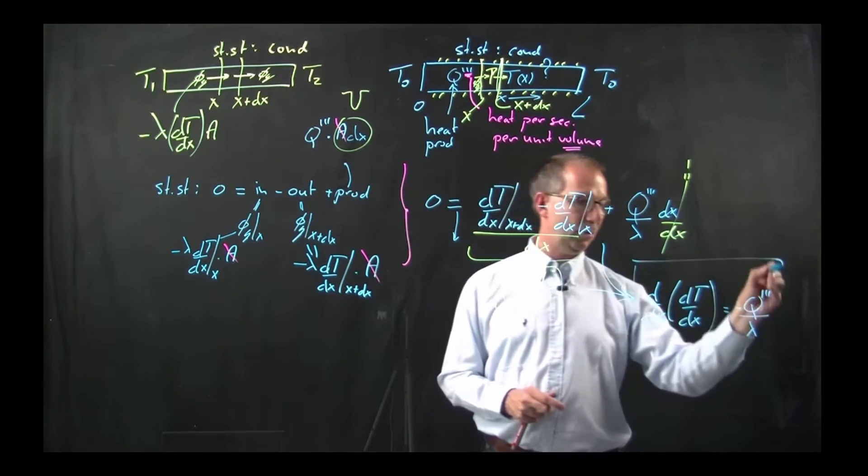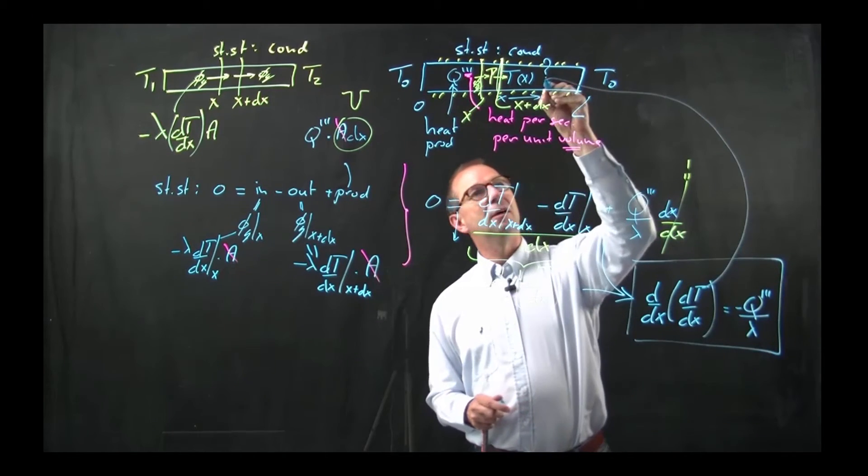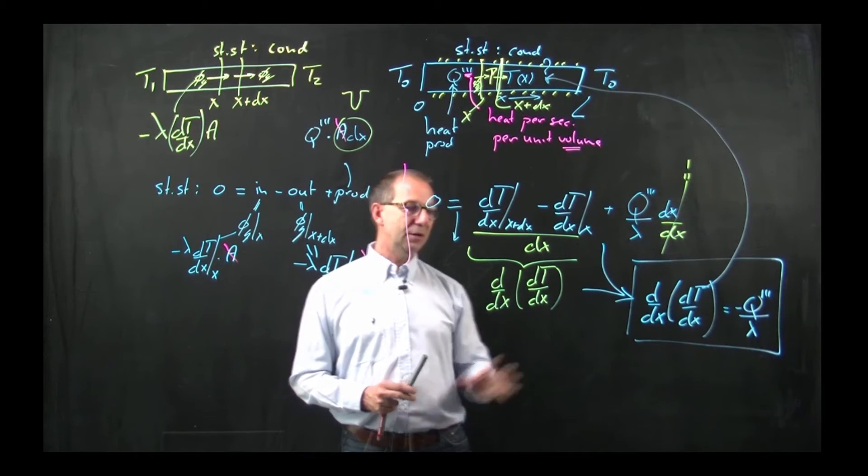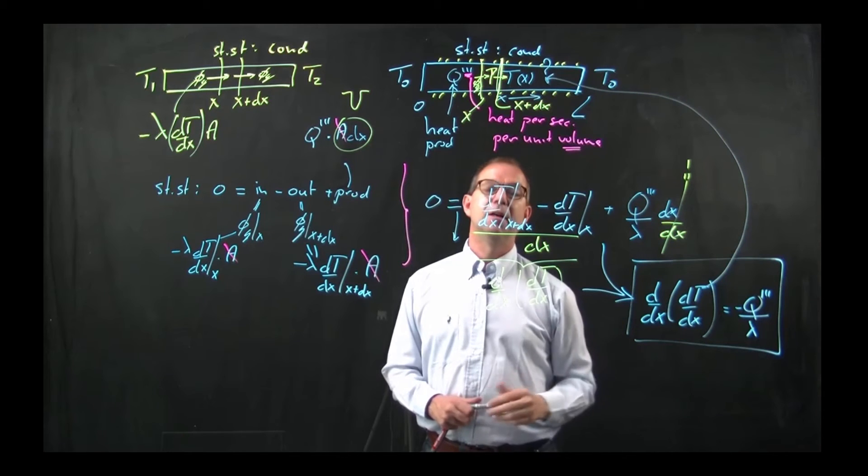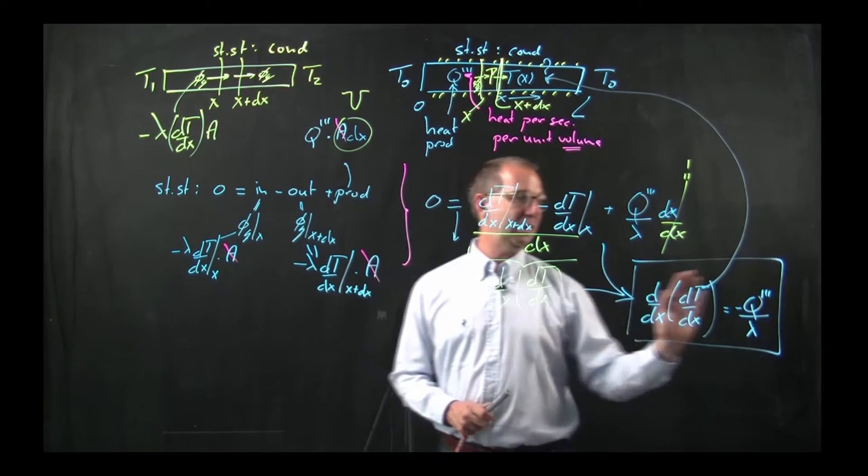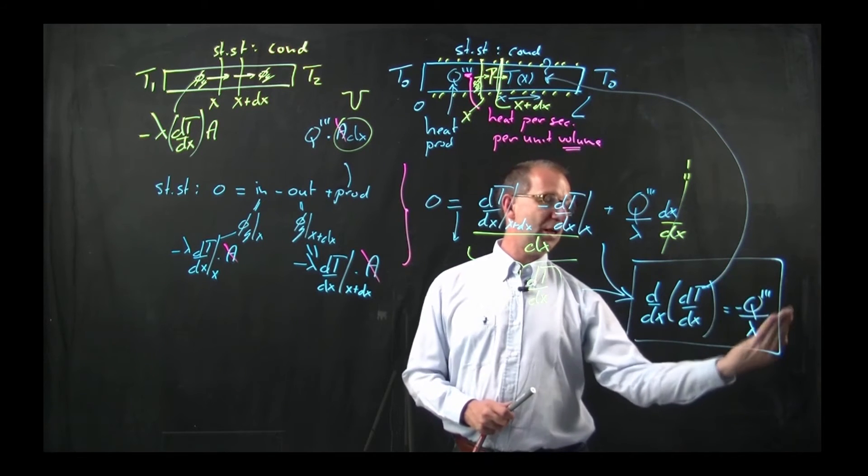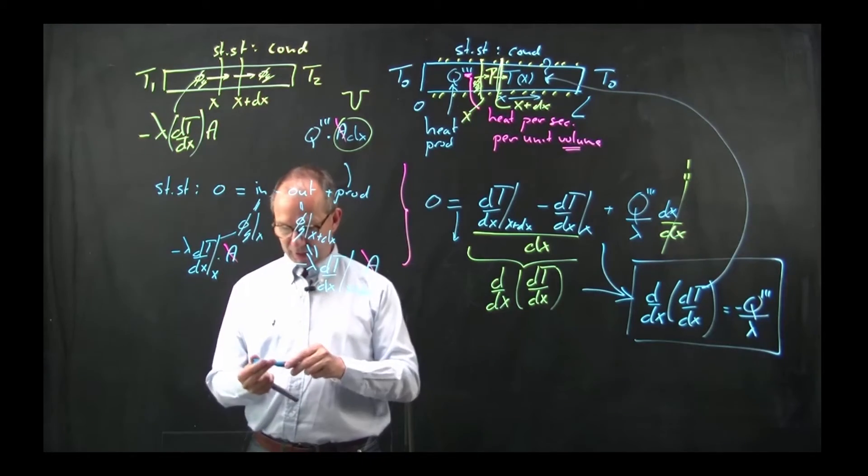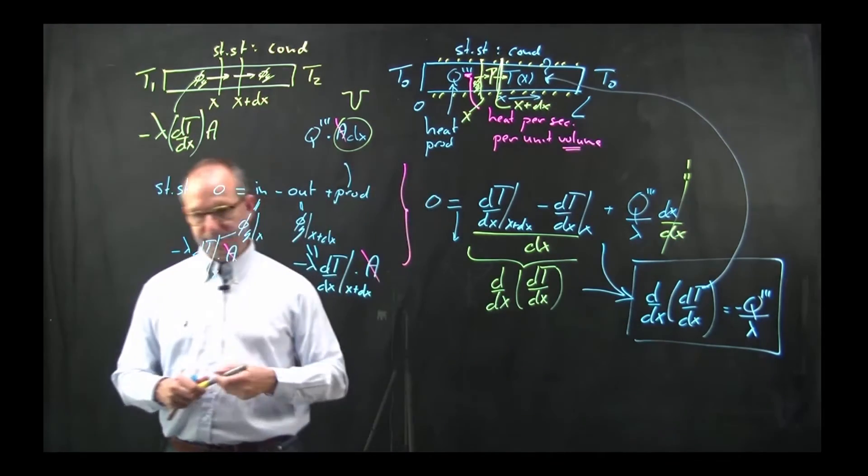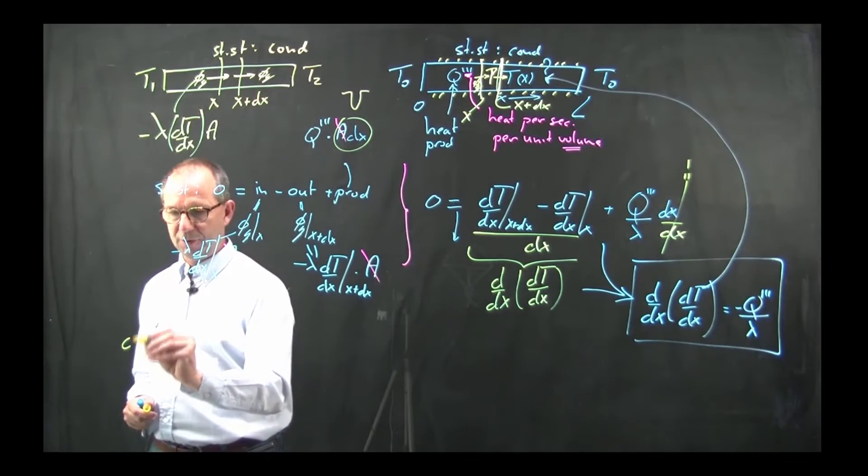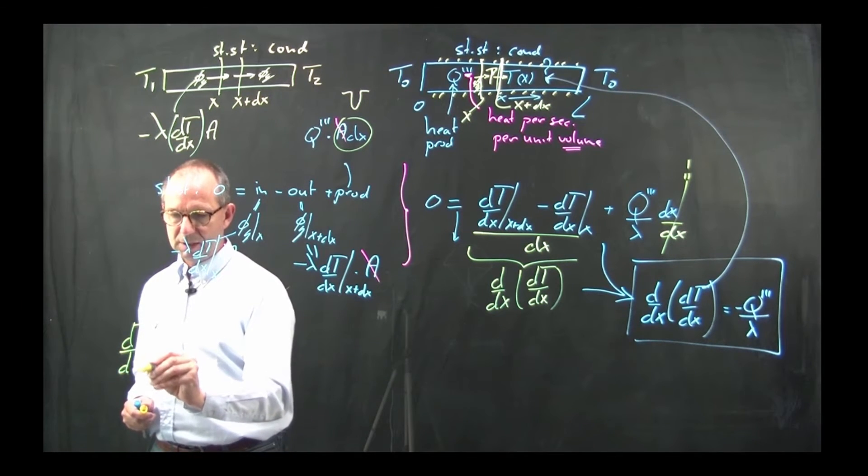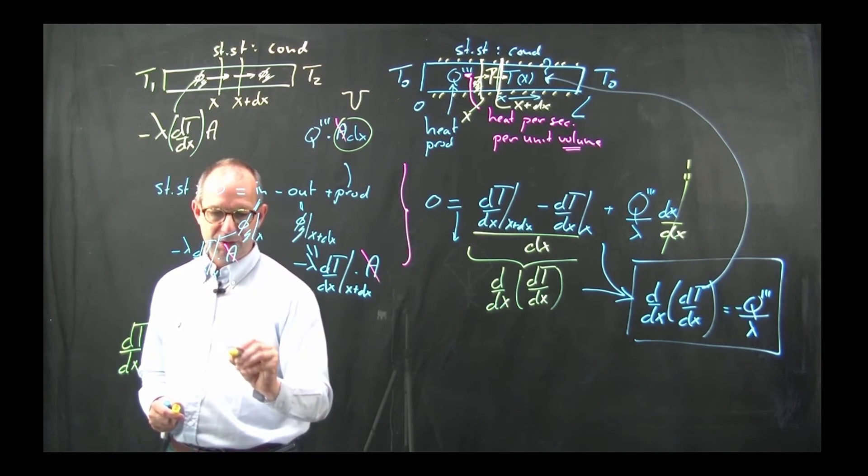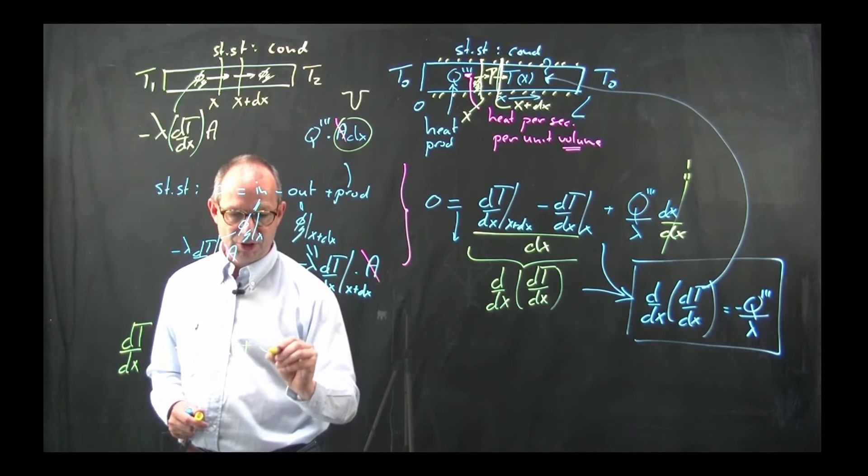Here is our new equation that governs the temperature distribution. This looks pretty much like we had in the video lecture, except that here was a zero because there was no production. This can be solved along the same lines. First, integrate only once. That leaves on the left side dT/dx and then on the right side you get minus Q triple dash over lambda times x, because I integrate, plus an integration constant.